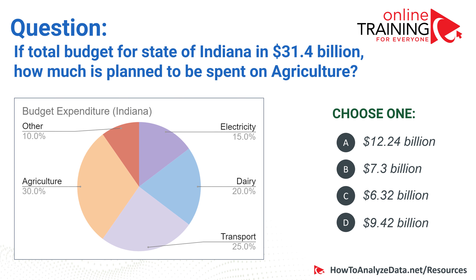To get to the answer, you need to understand what percentage is spent on agriculture. Based on the graph, the planned spend for agriculture is 30%. To calculate the budget for agriculture in actual dollars, you need to multiply 31.4 by 0.3, which represents 30%. Agriculture expenditures is 30% of the budget. Multiplying 31.4 by 0.3 gives $9.42 billion. So the correct choice is answer D, which is $9.42 billion.